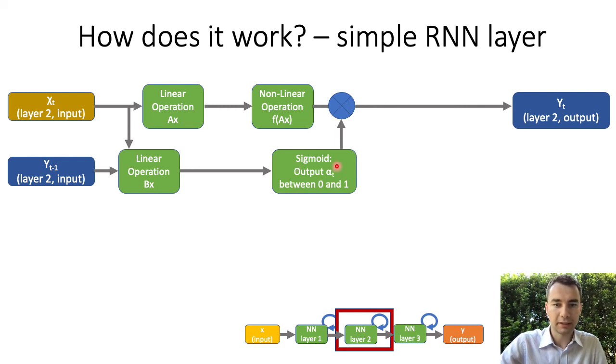The output of the sigmoid function is a number between 0 and 1. We can then multiply it with the output of the primary neural network. This way we obtain the output of the primary neural network modulated by the secondary neural network.